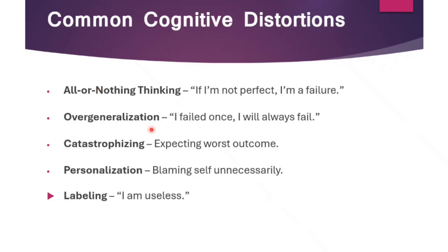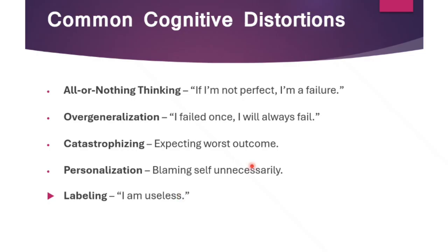Common cognitive distortions: First, all-or-nothing thinking — 'If I'm not perfect, I'm a failure.' Second, overgeneralization — 'I failed once, I will always fail.' Third, catastrophizing — expecting the worst outcome, such as 'I am useless.' These are the common cognitive distortions.